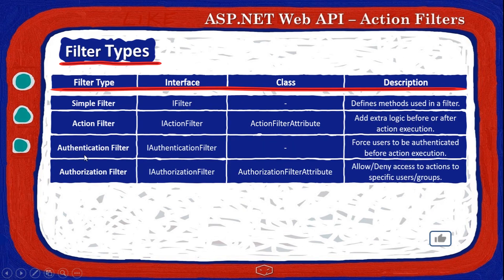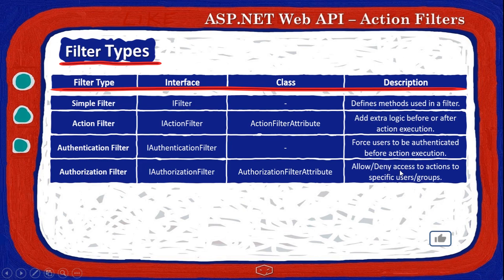The next two, authentication filter and authorization filter, are mainly used for login purposes. I will not talk about them here because this is for another video about logging. The authentication filter has an interface of iAuthenticationFilter and doesn't have any class. The authorization filter has an interface of iAuthenticationFilter and a class of iAuthenticationFilter attribute. The first one forces the user to be authenticated before an action is executed, and the second allows or denies access to an action for a specific user or group of users.